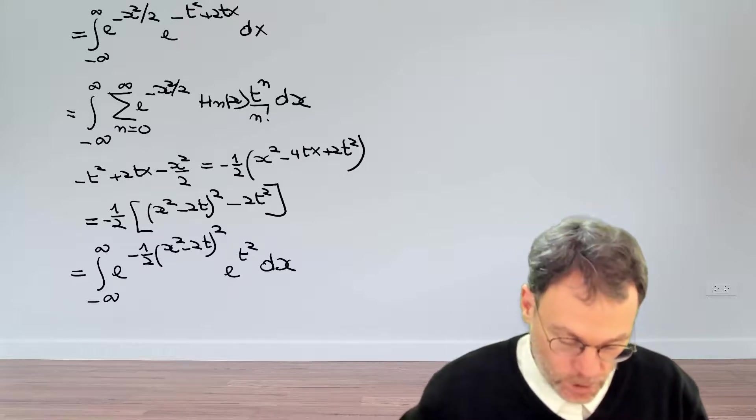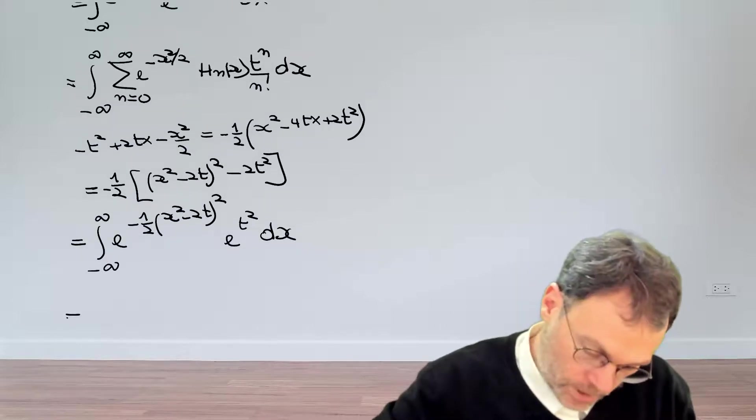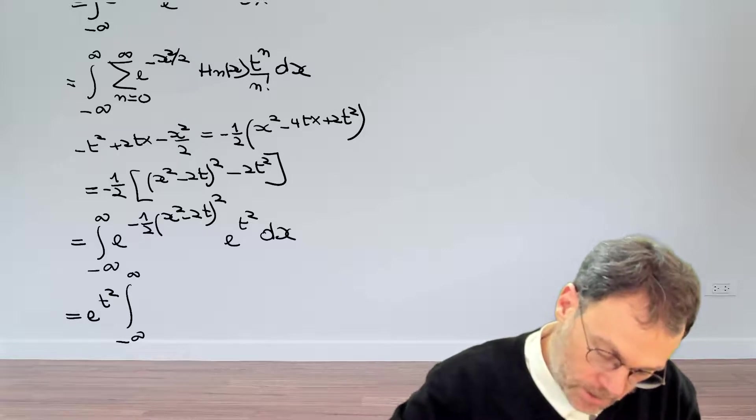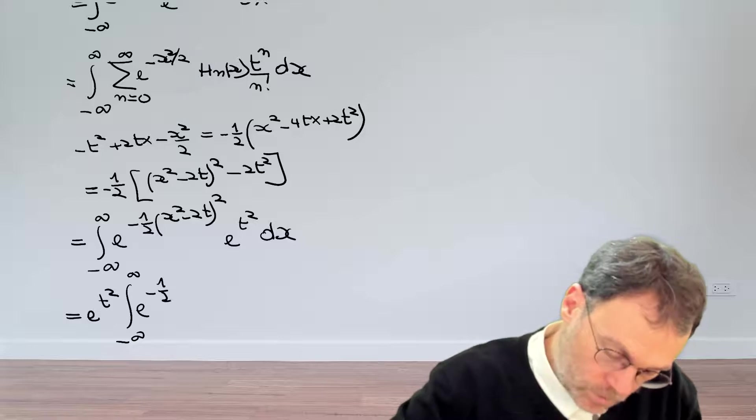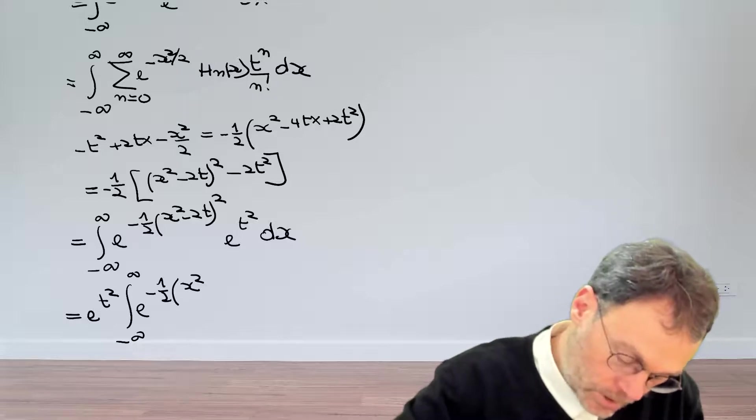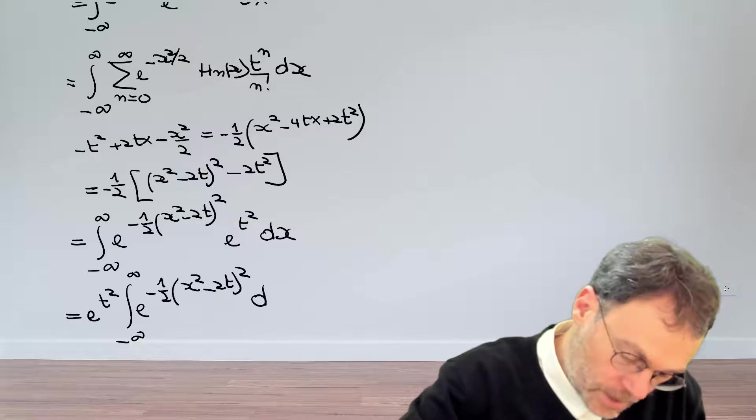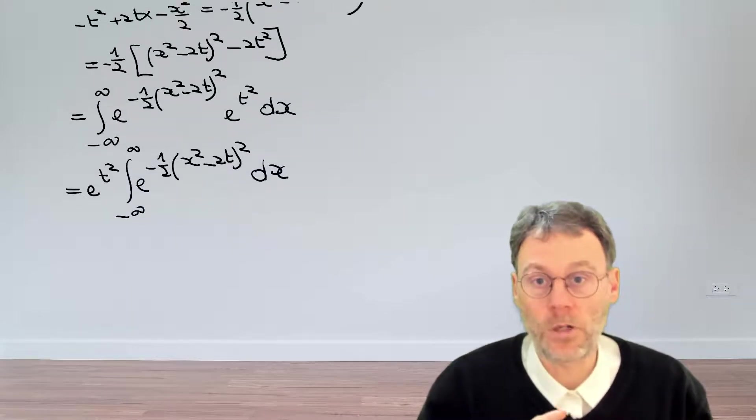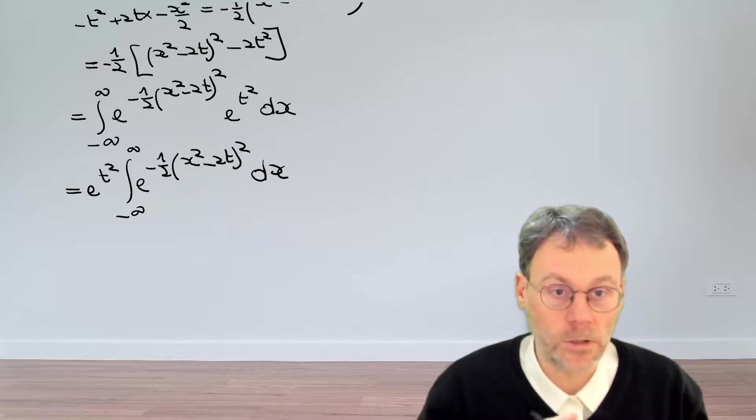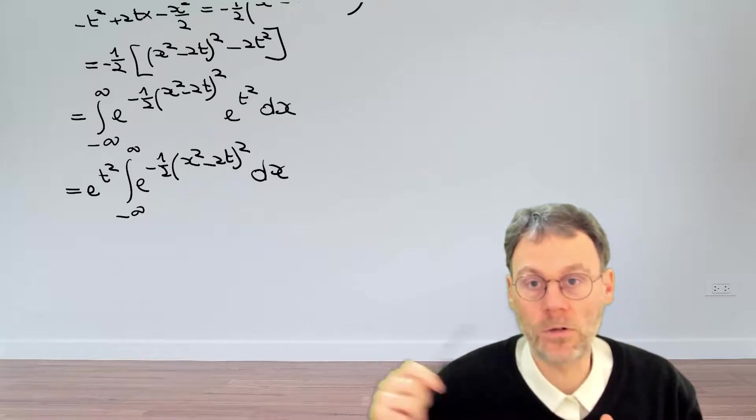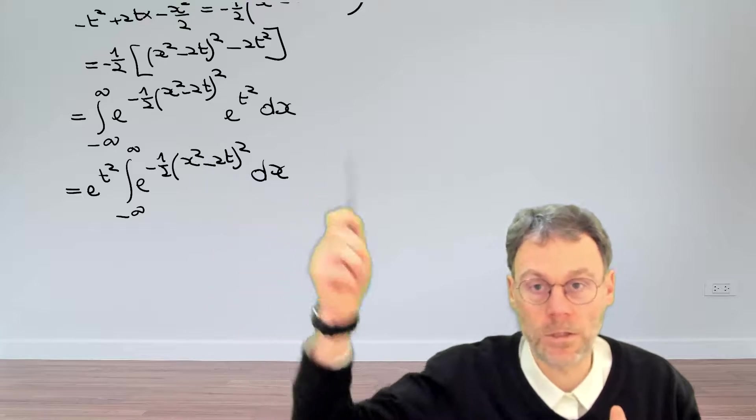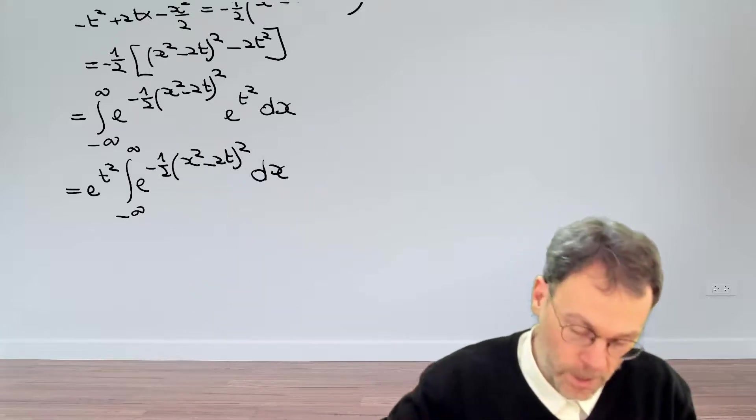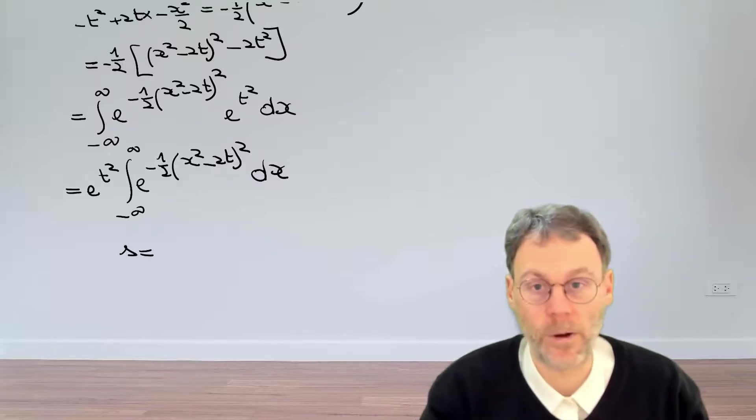The exponential t squared, we can bring that out of our integral. It doesn't really play a big role because we integrate over x. Exponential t squared times the integral exponential minus 1 half x minus 2tx squared dx. So now this starts to look very much like a Gaussian integral that we know. The only thing we need for a Gaussian integral is just exponential minus something squared. Our something here is a little bit more complicated. We just make a substitution of variables.